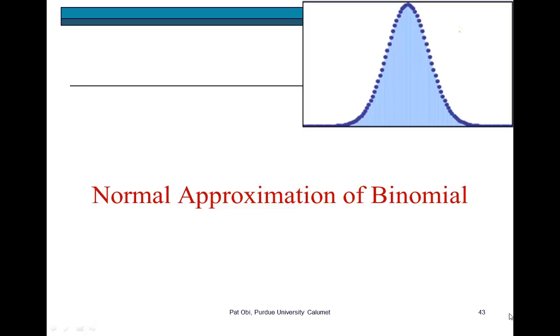In this section, I show how to use the normal distribution to find probabilities for a binomial variable. Remember, these are the variables that assume success or failure outcomes.